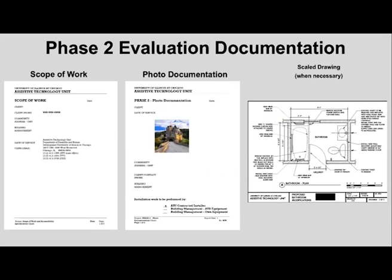Once clinicians finish the phase two evaluation, you will receive a report that includes the scope of work and photo documentation, providing a summary of environmental modification recommendations and who will perform the work. If the environmental modification is complex, you will also receive a scale drawing. Basic modifications such as installation of a grab bar will not require a scale drawing, but complex modifications such as an entire bathroom modification or a ramp and vertical platform lift will include both the scope of work with photo documentation and the scale drawing.